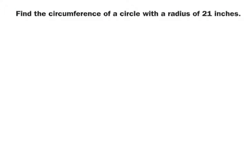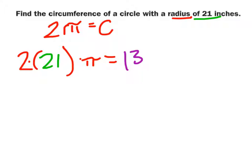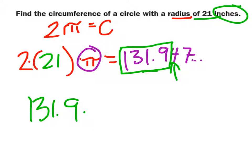Find the circumference of a circle with a radius of 21 inches. We know that circumference equals two times the radius times pi. So: two times 21 inches times pi. Using the actual pi button on the calculator, we get approximately 131.94. Rounding to the nearest tenth: the 4 is less than 5, so this stays at 131.9 inches.